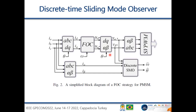Going to the control strategy of the permanent magnet synchronous machine, the machine is driven by field-oriented control. The focus of the paper is the discrete sliding mode observer, whose inputs are the motor currents and the modulated signals of the control strategy. Using that, we can compute the speed and rotor position. We are also using space vector modulation.